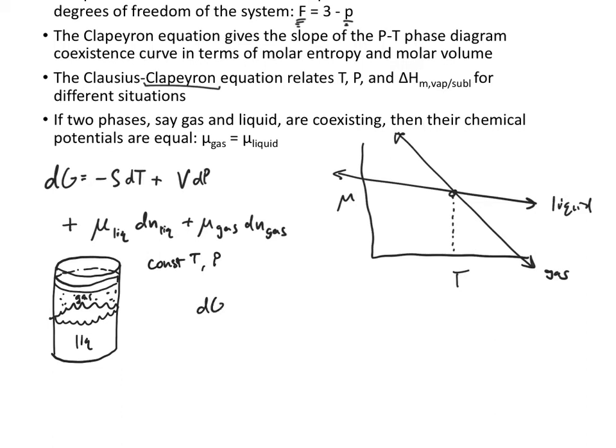So that means that dG is going to be equal to μ_liquid dn_liquid plus μ_gas dn_gas. Because we have constant temperature, constant pressure, so dT and dP both equal zero.